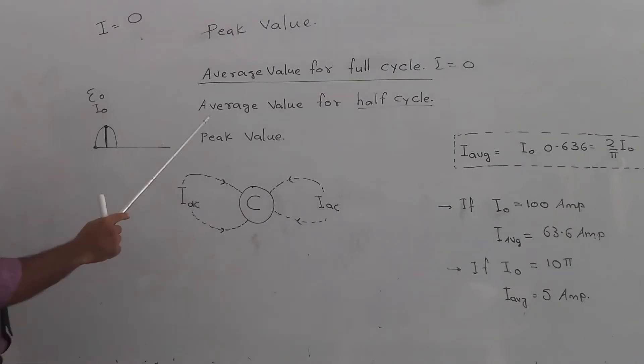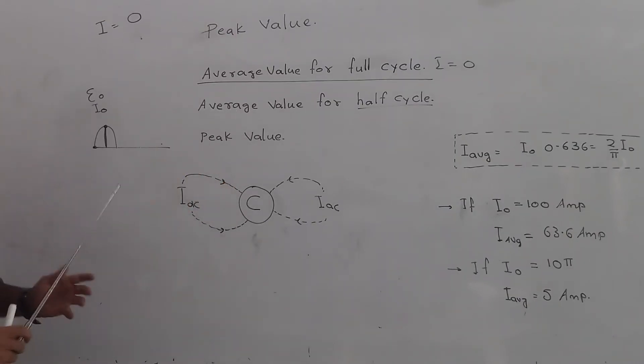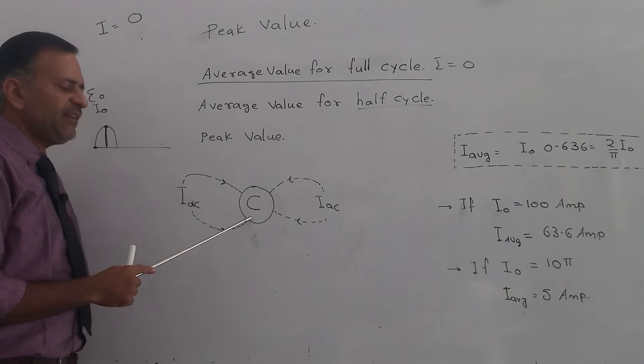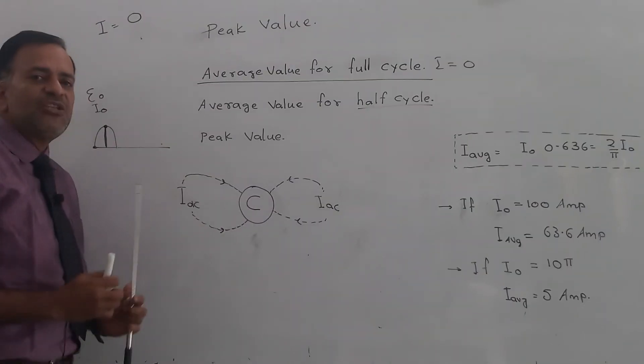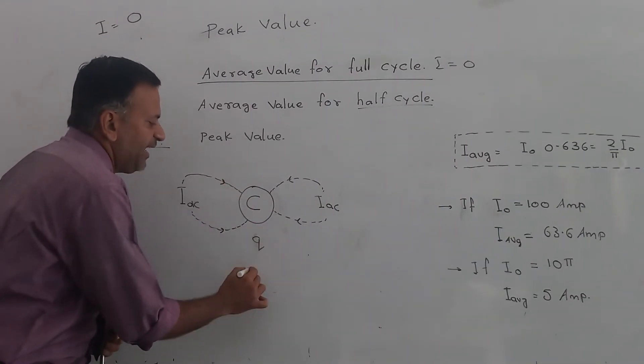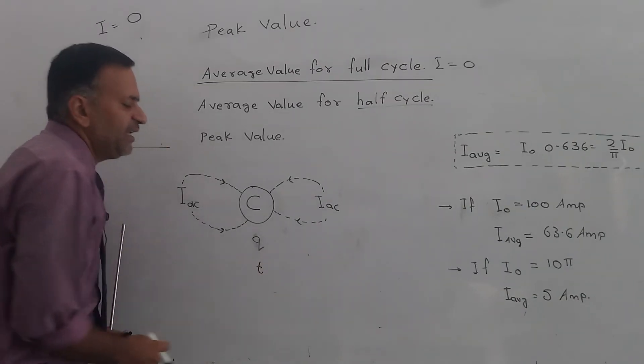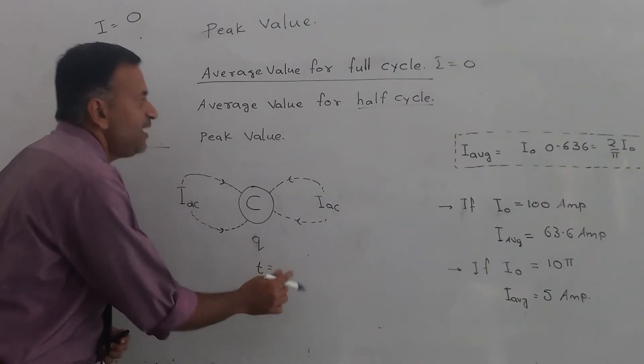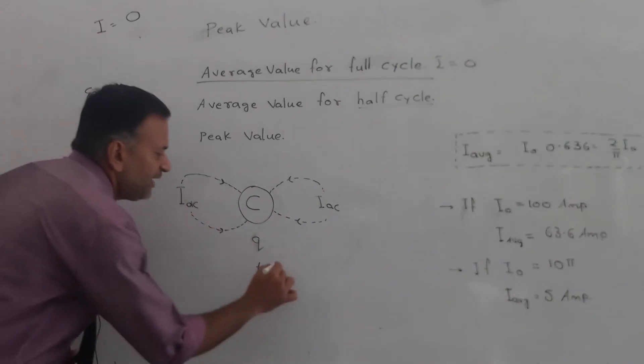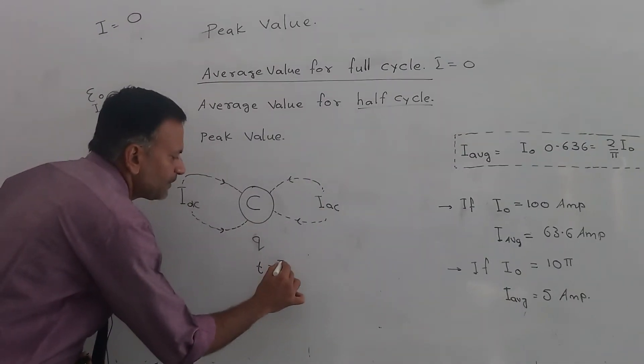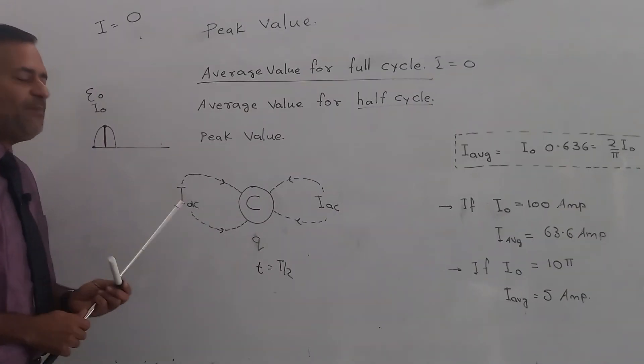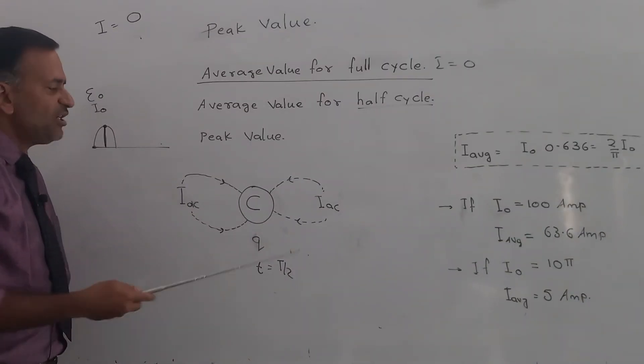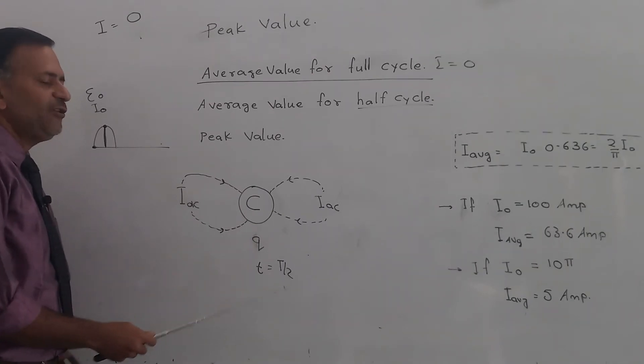First we need to define what is the average value of AC for half cycle. Suppose there is an electric circuit. To transfer charge Q, how much time is needed? The time is T by 2, since we are calculating for half cycle. What is the time? T by 2. What is the charge to be given to this circuit? It is Q.